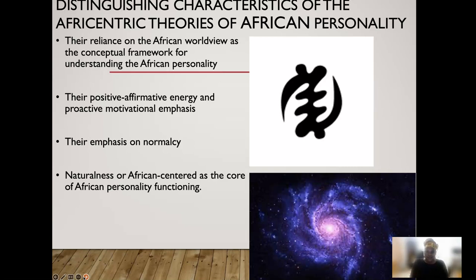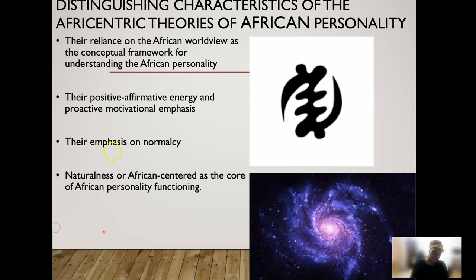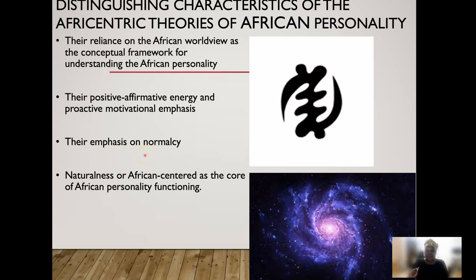Afrocentric theories also come from a positive, affirmative energy and a proactive motivational emphasis — remember the differentiation between the types in Azibo's classification. They also emphasize normalcy, and in an upcoming unit we're going to talk about what psychological normalcy looks like for African people.